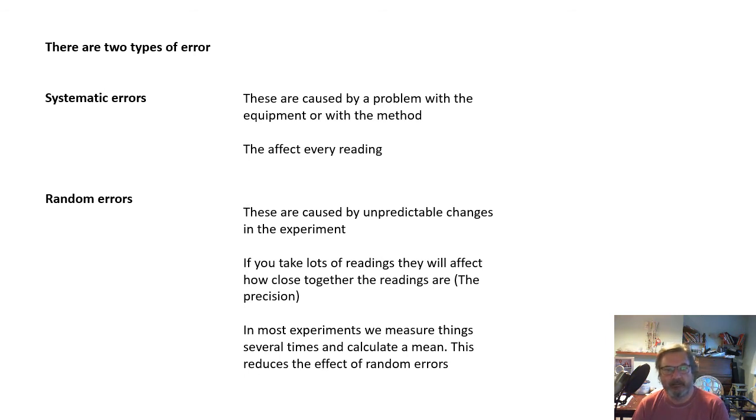Let's talk about errors. Now there are two types of error: there are systematic errors and there are random errors. Systematic errors: there's something wrong with the system. By the system we're talking about the equipment or the method. There's something wrong with the way that we're doing it, something wrong with the equipment. And you can tell the difference. Systematic errors will affect every reading. Every reading, there will be the same error with a systematic error.